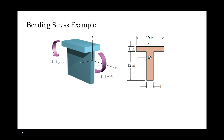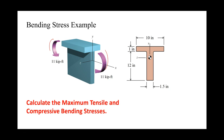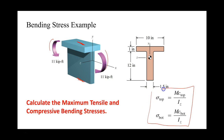Let's do a quick example. We have a beam segment with an 11 kip-foot bending moment at each end, and we want to determine the maximum tensile and compressive bending stresses. The beam has a T cross section. By observation, the maximum tensile stress will be at the top and the maximum compressive stress will be at the bottom. We know M, our bending moment, which was given, and we'll need to determine c_top, c_bottom, and I_z.